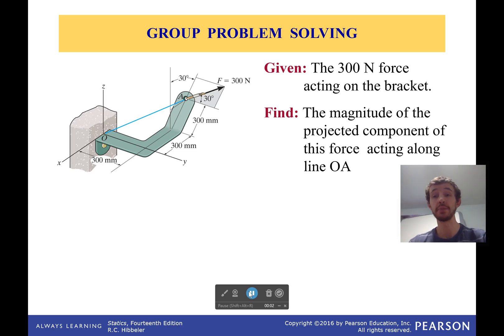Hello everyone, welcome back. So we're finally to the group problem. Grab a buddy or do it alone and see if you can do this one. So what is the problem actually asking us? Well, we have a 300 Newton force that's acting on this bracket. As you can see it's a very three-dimensional bracket, it's a very strained bracket. Why is it shaped this way? Who knows? And we want to figure out the magnitude of the projected component of this force acting along this line right here.